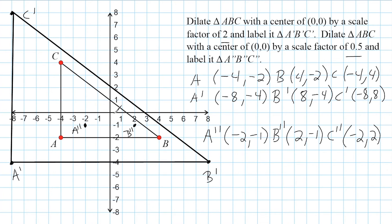C double prime is at negative two, positive two, located right here. Now we go ahead and connect our points: A to B, B to C, and C back to A.